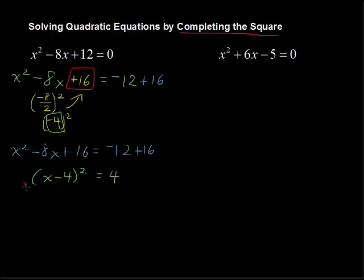Now, we can take the square root, and this is why we complete the square, so that we can take the square root of each side. And remember when you take the square root to solve, you've got to say plus or minus. And what does that leave us with? It leaves us with x minus 4 equals plus or minus the square root of 4, which is 2.